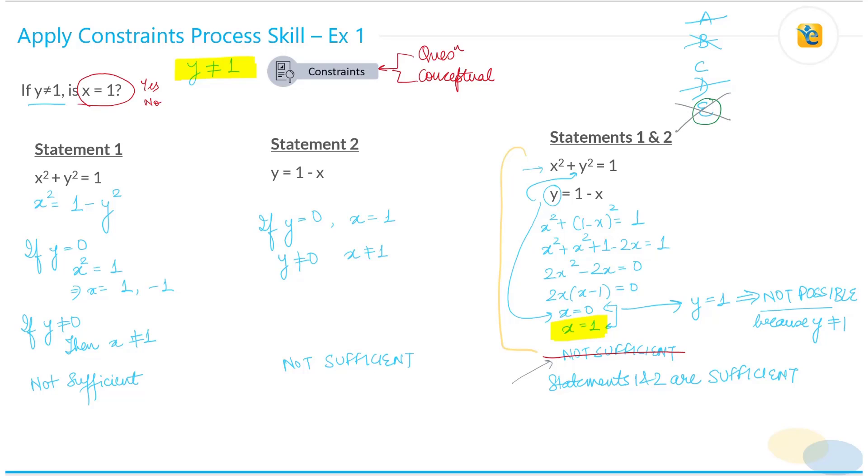E is not the correct answer choice, the correct answer is choice C. So very very important to apply the constraints in order to arrive at the correct answer. So always check back before you mark your answer, always check back is there any information in the question statement, any constraint that I have not applied or any conceptual constraint that I forgot to apply.